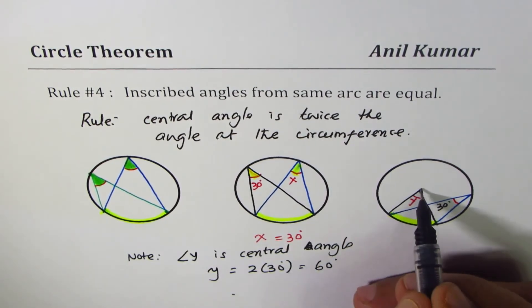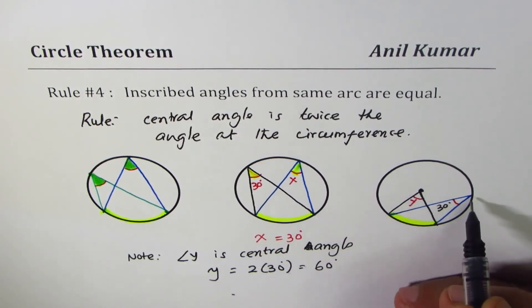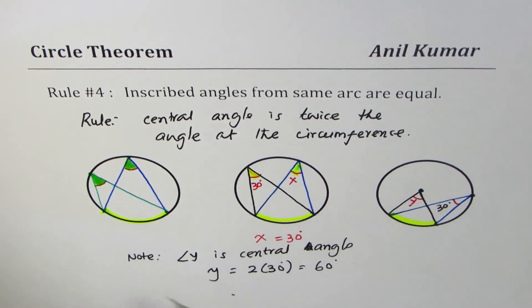Note: this is not an inscribed angle. This is inscribed angle, that's the central angle. So in such a case it's a trick question. In such a case you have to relate central angle with the inscribed angle. If both are inscribed angles with the same arc, then they are equal. I hope that helps.